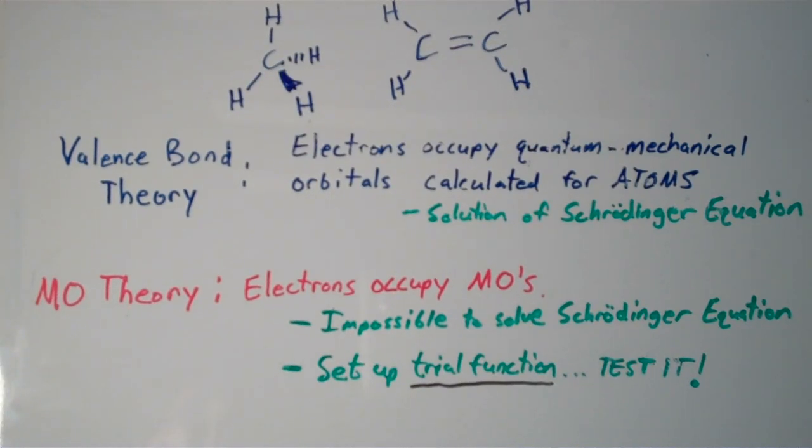So, in molecular orbital theory, the electrons occupy MOs, molecular orbitals. And for even the simplest, simplest molecules, it's impossible to solve the Schrödinger equation for the entire molecule. That's just the thing about differential equations of, you know, order 2 or higher. Many of them are impossible to solve.